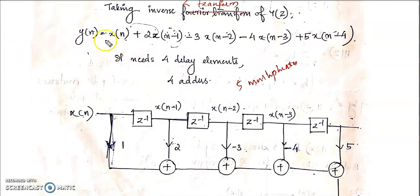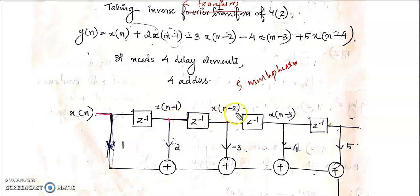X(N) is the input and Y(N) is the output. The input X(N) is given. We consider the first delay element — 1-unit delay — so the output becomes X(N−1). That is passed through another delay element, 1 more unit delay, so X(N−2). Then passed through another delay element, giving X(N−3). And finally, one more delay element, giving X(N−4).